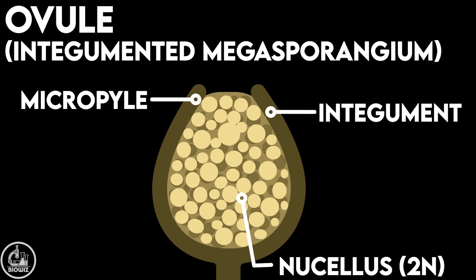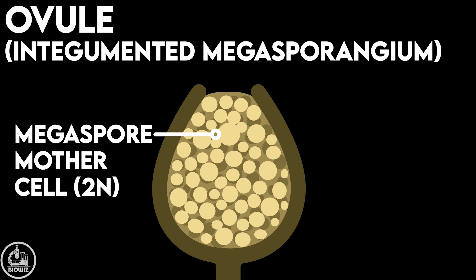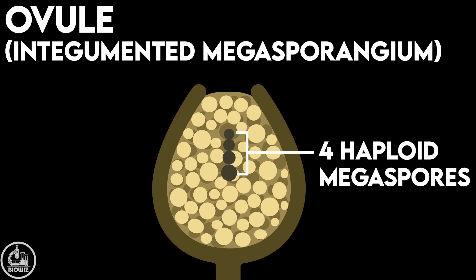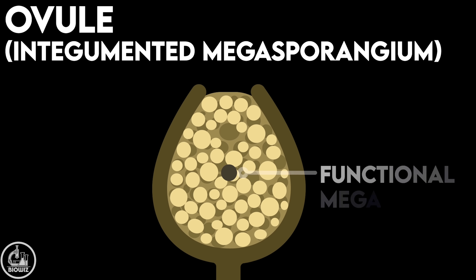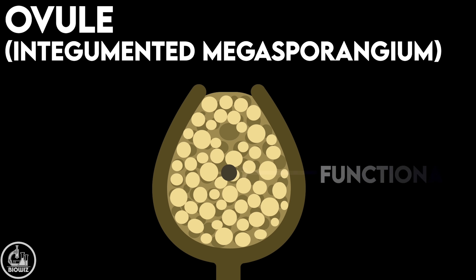The integument leaves a small opening on the ovule called the micropyle. One of the cells of the nucellus differentiates into the megaspore mother cell. The diploid megaspore mother cell then divides by meiosis to form four haploid megaspores. Out of these four, the first three from the micropyle end are non-functional and degenerate, while the last megaspore remains functional.